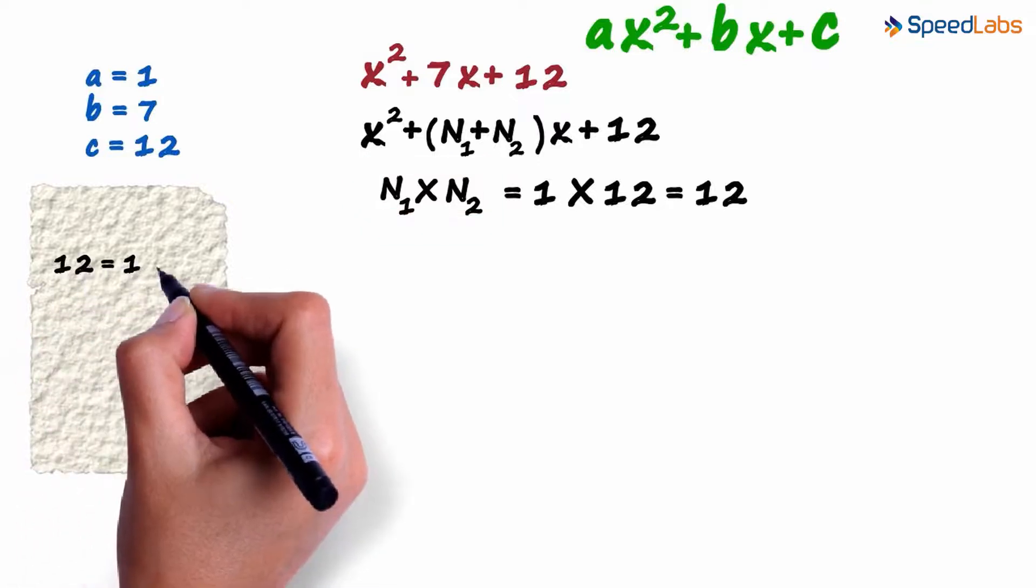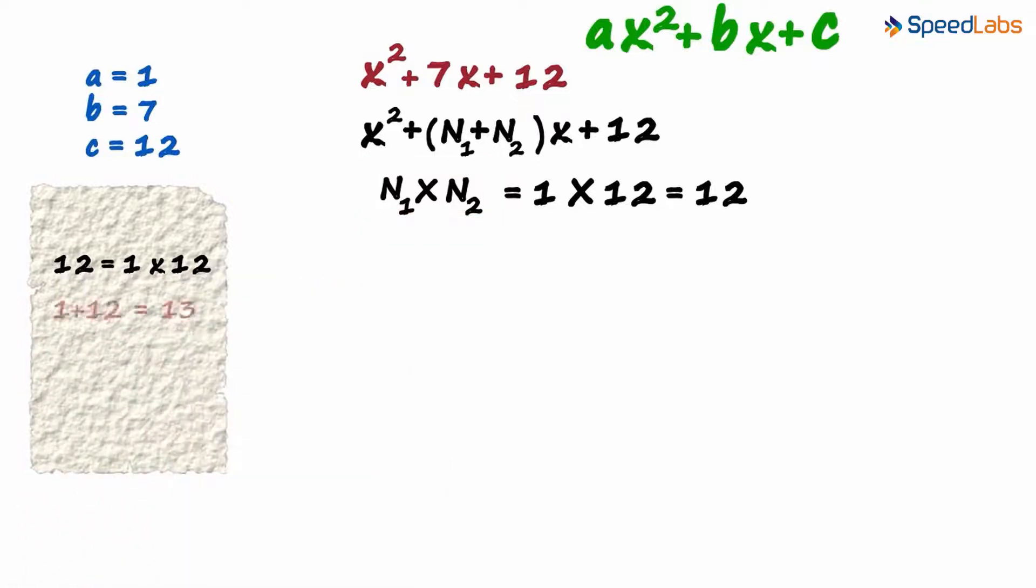12 can be written as 1 multiplied by 12. The sum of two numbers is 13 and what we want is 7. So these two numbers are not n1 and n2.